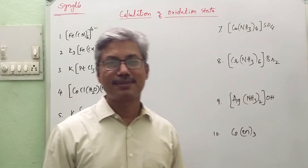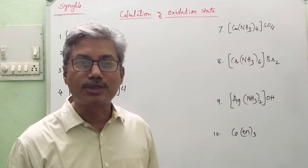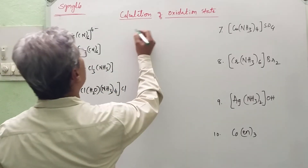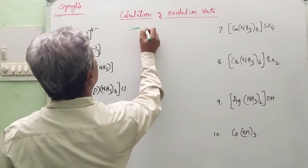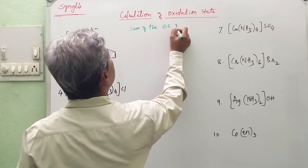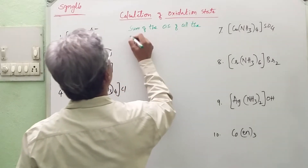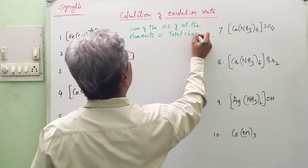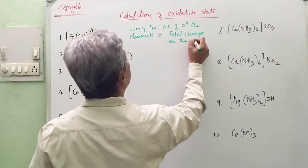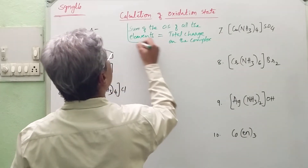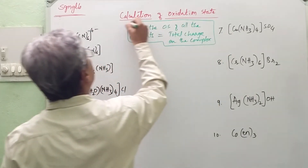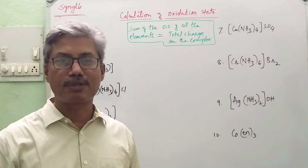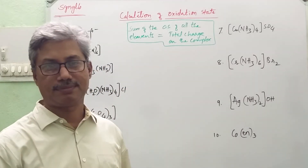Hello students. In this video we try to understand how to calculate the oxidation state of the central metal atom of the ion of the given complex compound. The formula is: the sum of the oxidation states of all the elements must be equal to the total charge on the complex. This must be very clearly understood. This is a simple technique.